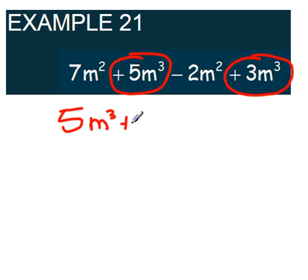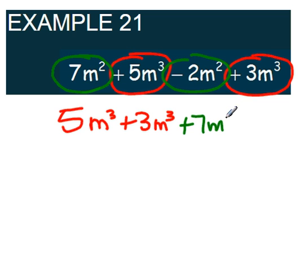So we have 5m to the third plus 3m to the third. I also have some m squares. So I'm going to have plus 7m squared and plus a negative 2m squared.